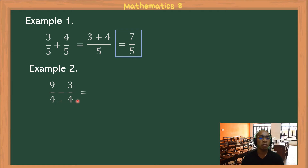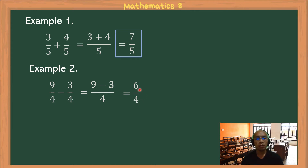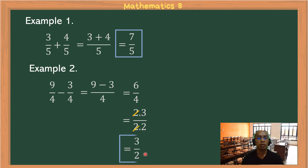Example 2: 9/4 − 3/4. Again, this is a similar fraction. Copy the denominator 4, then 9 − 3 = 6, giving 6/4. This fraction can be reduced. The prime factorization of 6 is 2 × 3, and of 4 is 2 × 2. The common factor 2 cancels out, so the answer is 3/2.